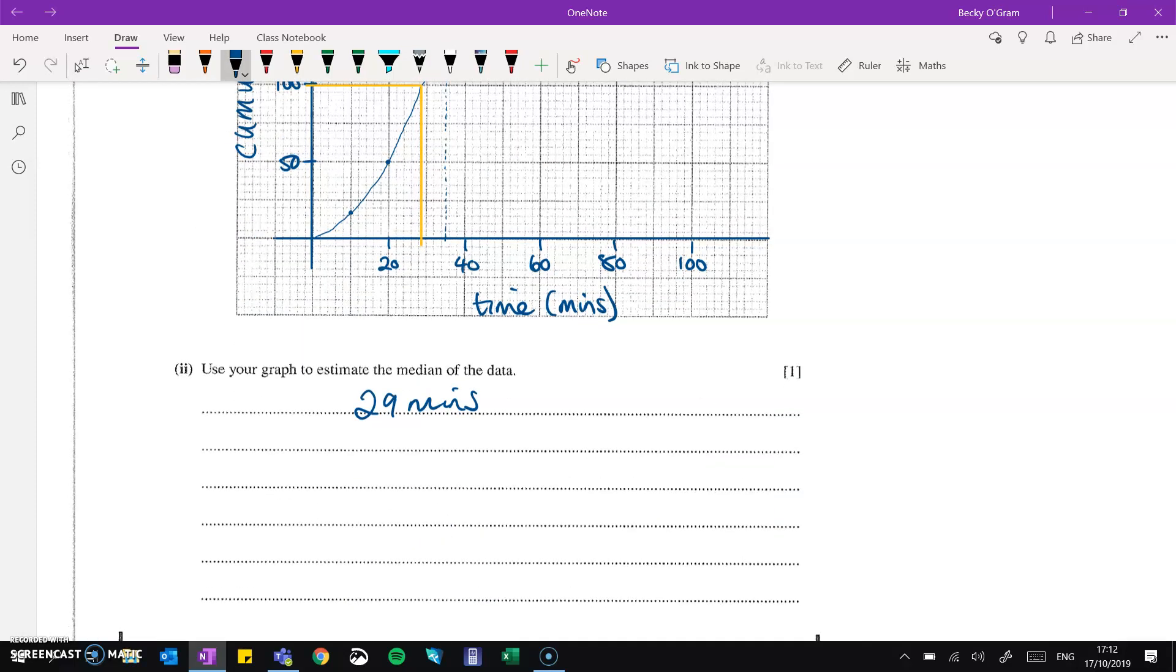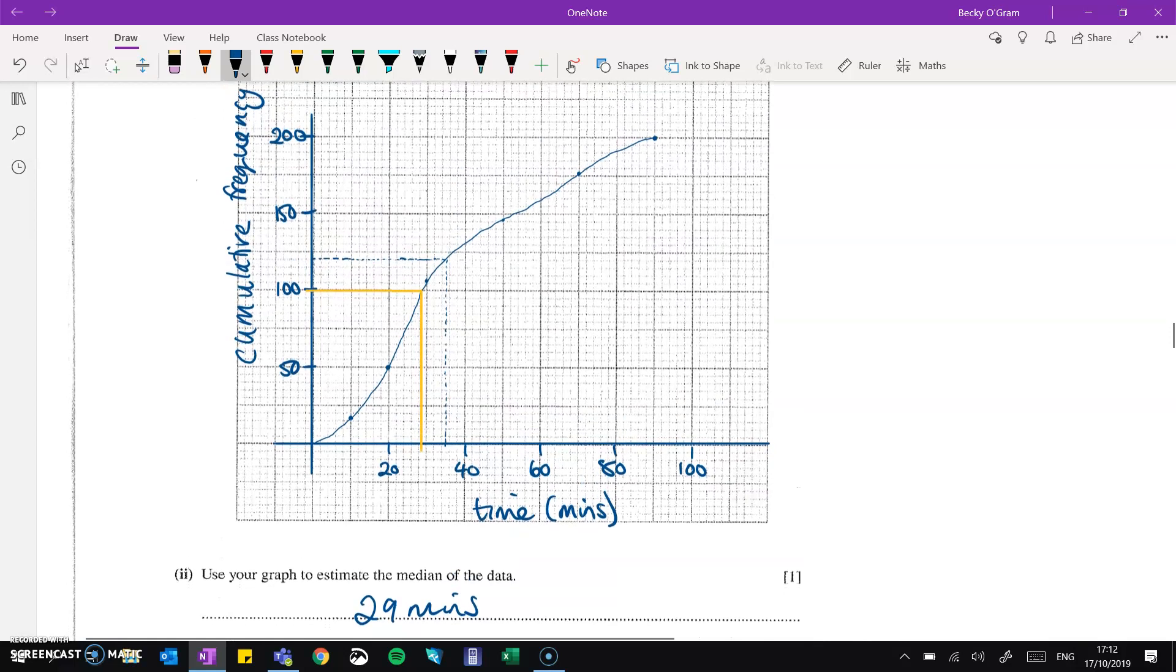Use your graph to estimate the median. The median happens exactly in the middle, which would be at 100. Use your ruler, read it off. Now, the accuracy of that will depend on how exactly your curve goes. And you'll be given a little bit of leeway. I get 29 minutes off of my curve.